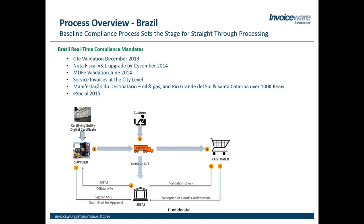The big one everyone is concerned about is NF-e 3.1 — it's due in December. It's a new schema change. There are three things to be aware of: first, it's a new schema with new requirements and new information, including a lot around importation on how goods get into the country, and also manipulation to make it easier for the government to audit you. The test servers — what we call homologation environments — have been live for a while, but you must transition by December. It's a large project; our average upgrades are under three weeks, but I've heard companies take three to four months, and I've talked to many that have tried and actually failed.